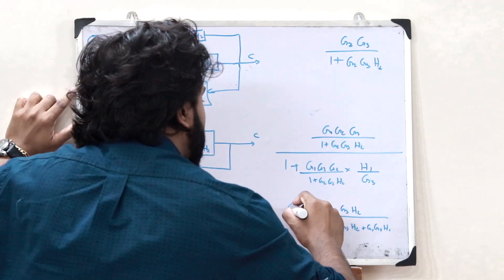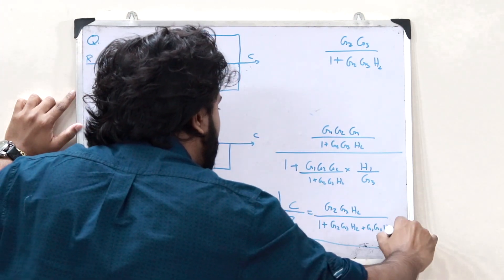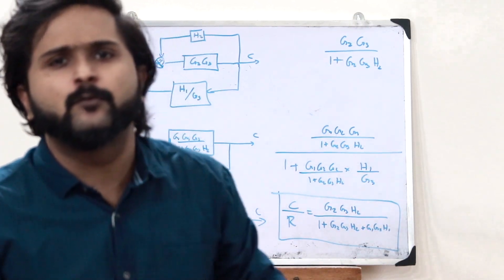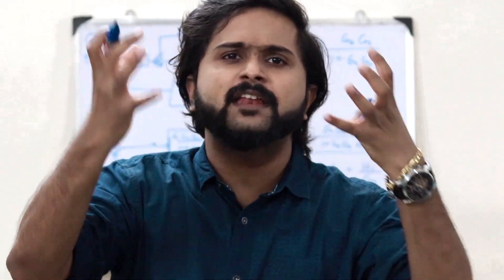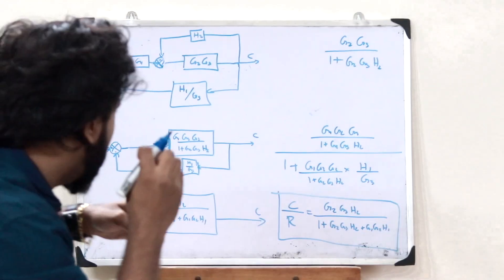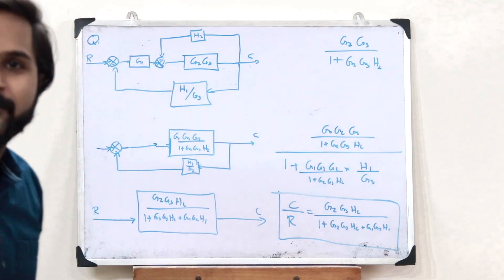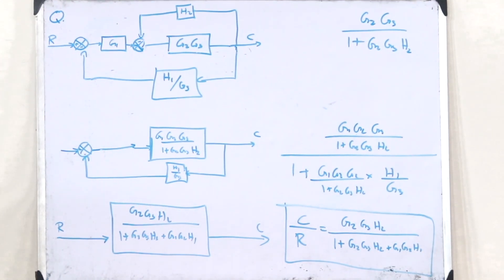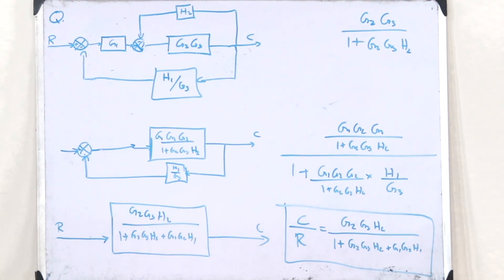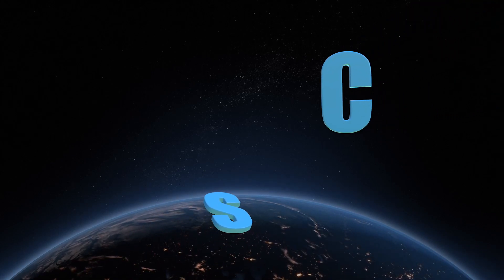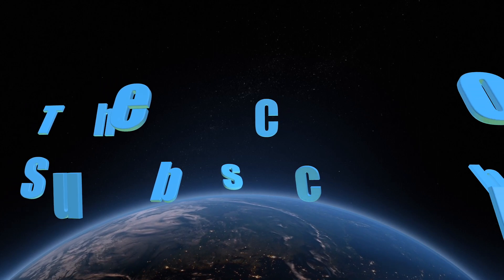So what we did was break down and simplify a very complex block diagram into a single block, thereby obtaining its transfer function. This is how we use block diagram reduction to find the transfer function of a complex control system — and it's as simple as that.